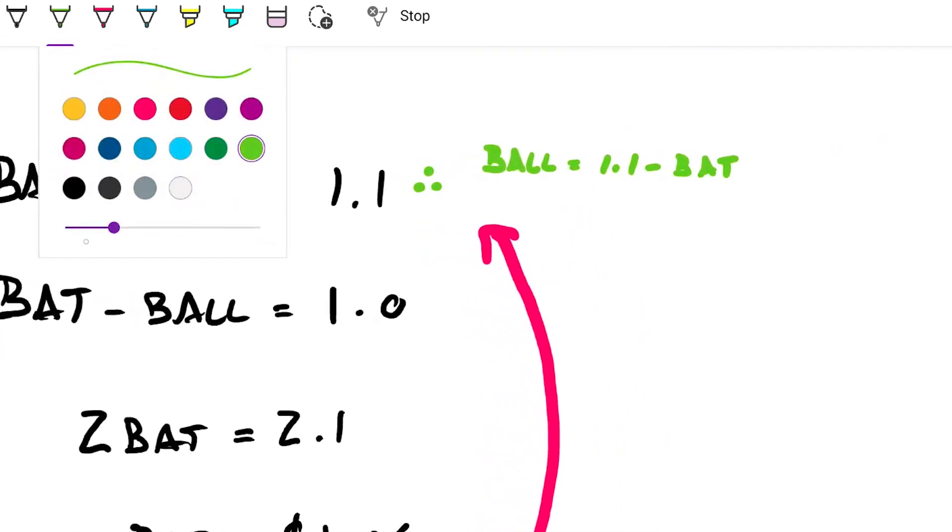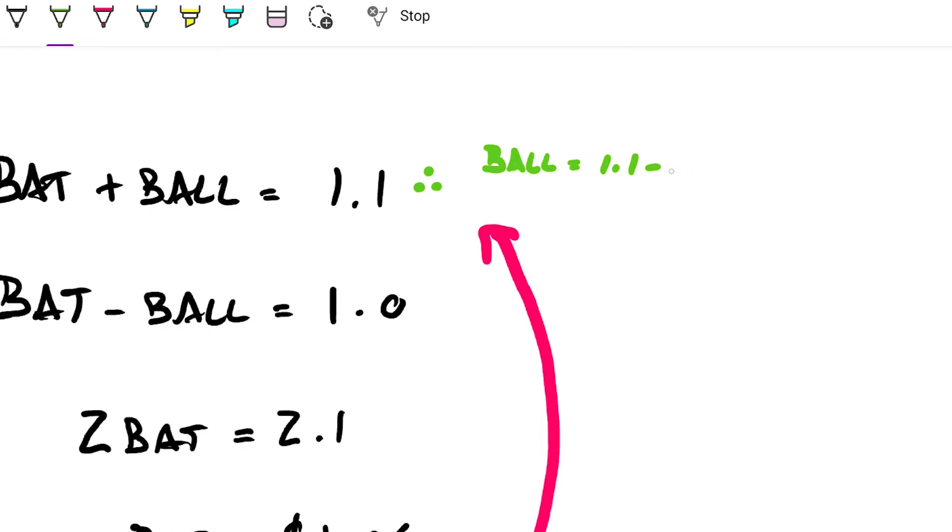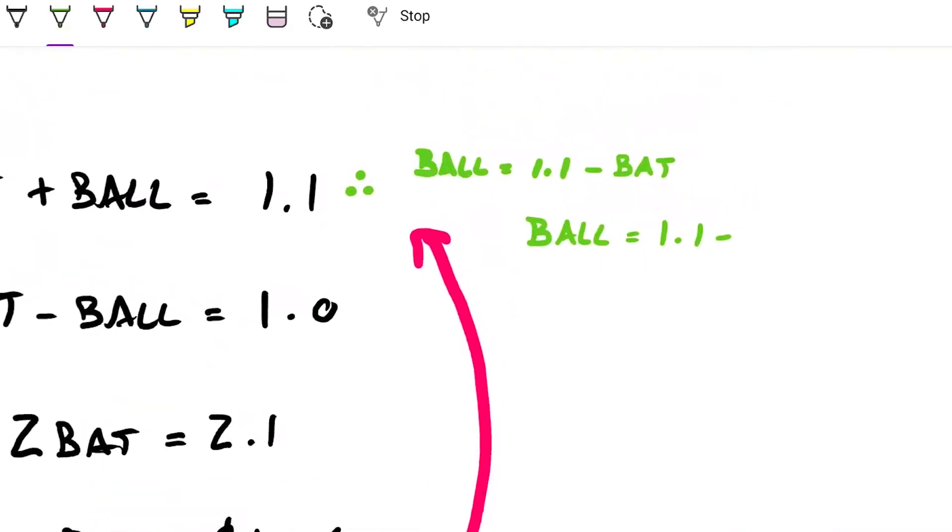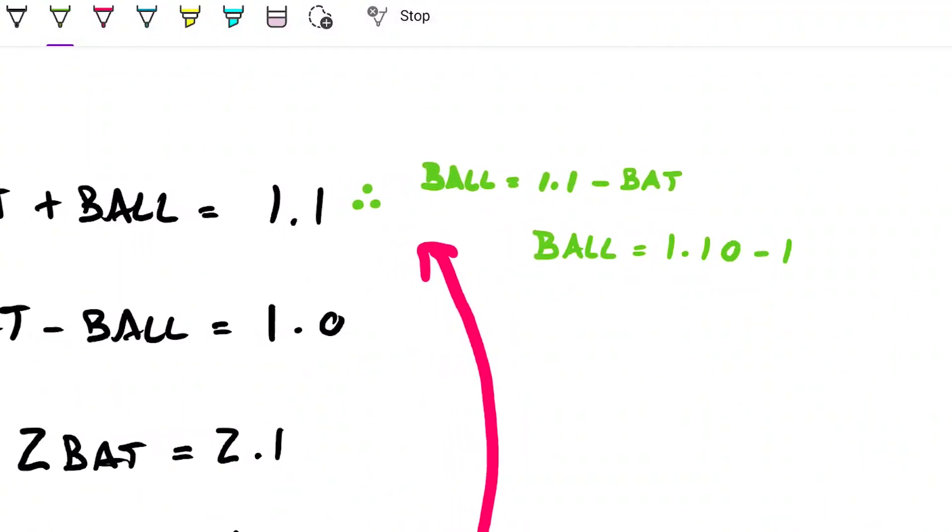And I'm obviously struggling here with the size of my marker—minus whatever the bat costs. And we just found out that the bat actually costs $1.05, so therefore the ball has to cost...